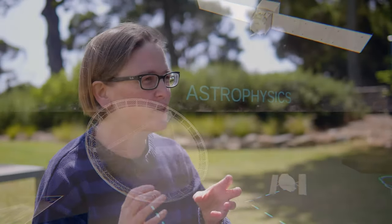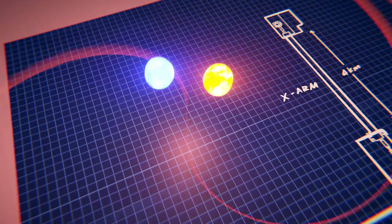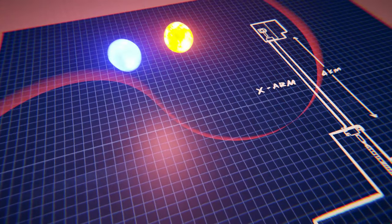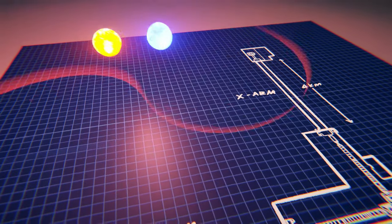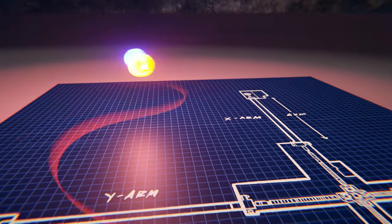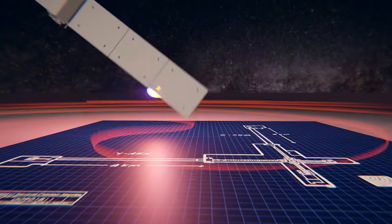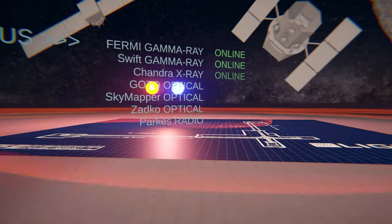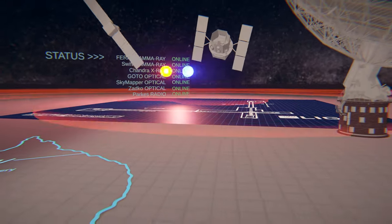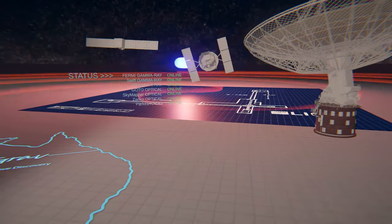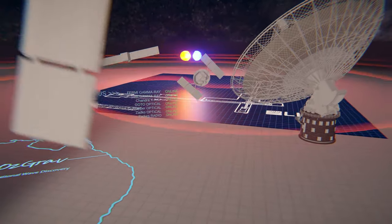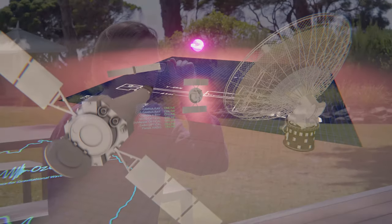LIGO, as you know, detects gravitational waves, but all of our normal telescopes, optical telescopes, radio telescopes, X-ray telescopes, they detect electromagnetic radiation, which is just light. So when LIGO detects an event, optical, radio and other telescopes slew to that position in the sky and what we're trying to do is find a counterpart. So LIGO is not so good at localizing where the event is. So it's good at detecting that a neutron star merger has happened, but we don't know where. The first job of the electromagnetic telescopes is to find a host. So find that merger, what galaxy it's in, so that we can then study it.